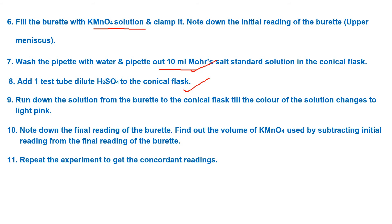The light pink color appears when KMnO4 is just in excess and the reaction is complete, meaning we have reached the end point and further KMnO4 is not reacting. Note down the final burette reading and find the volume by subtracting the initial reading from the final reading. For example, if final reading is 10 and initial is 0, volume is 10 ml. This volume of KMnO4 is used for final calculation.